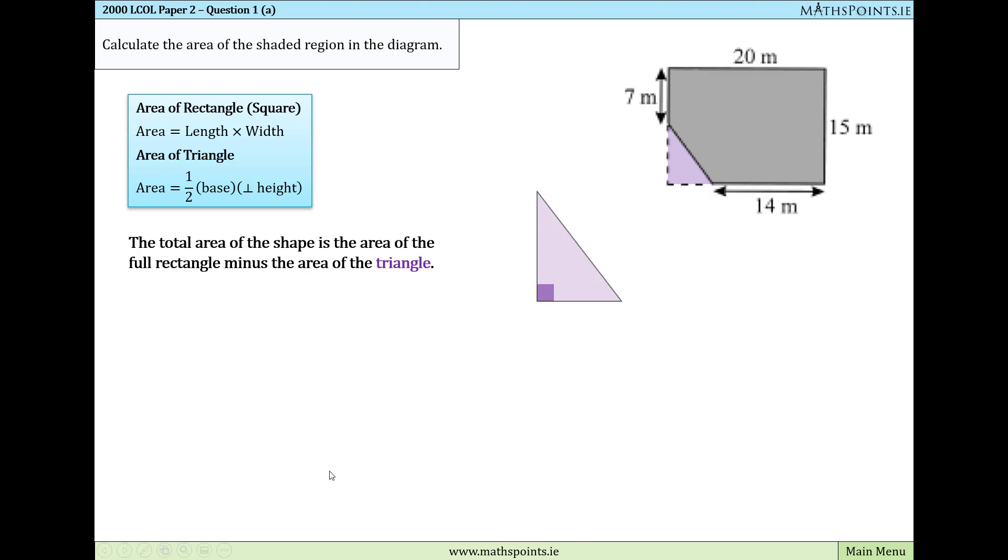If we take a look at the triangle, we can see that we're missing two dimensions. We don't have the height, but it's easy to calculate. The height here is going to be the full width of the rectangle, which is 15 minus this section here, which is 7, and 15 minus 7 is 8.